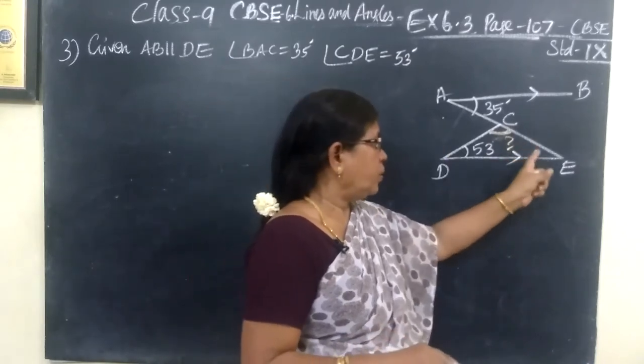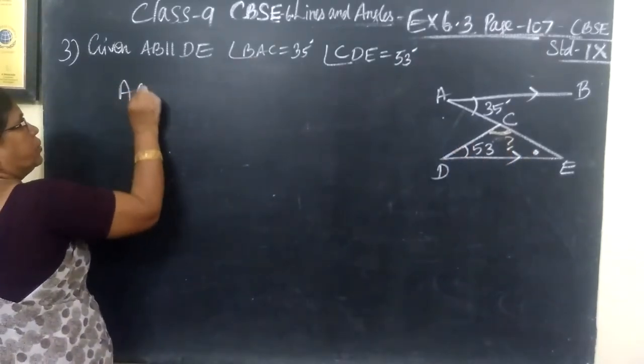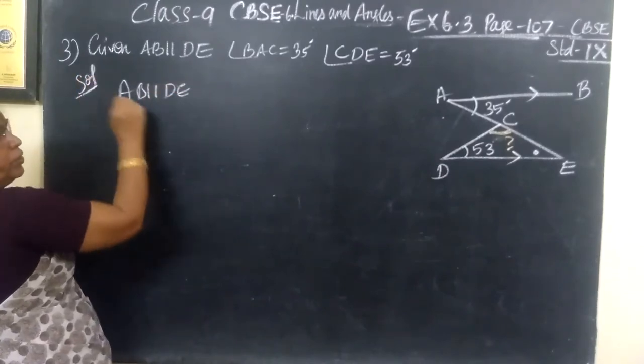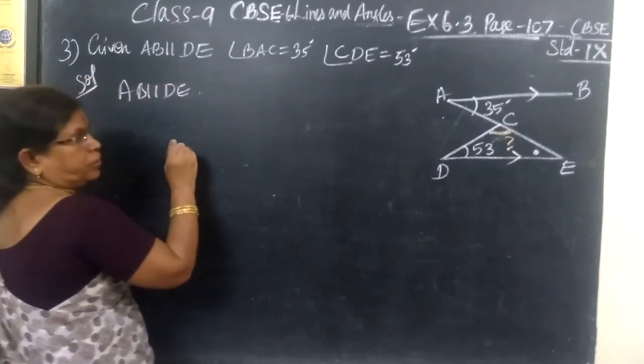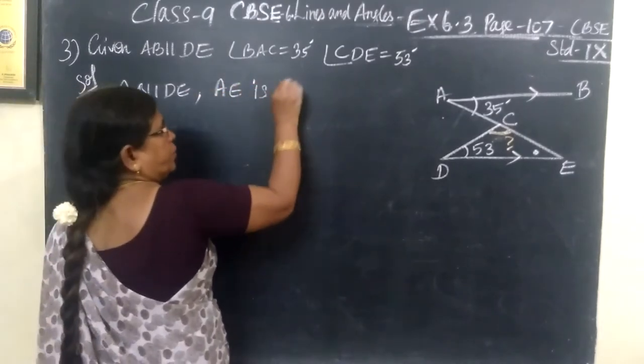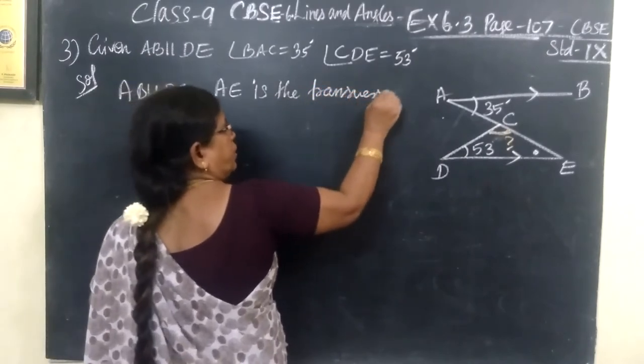We want to find this angle. It is given AB parallel to DE. Then, what is the transversal? AE is the transversal.